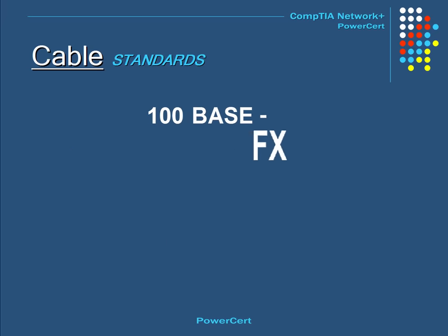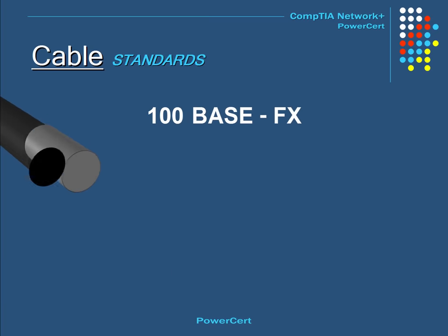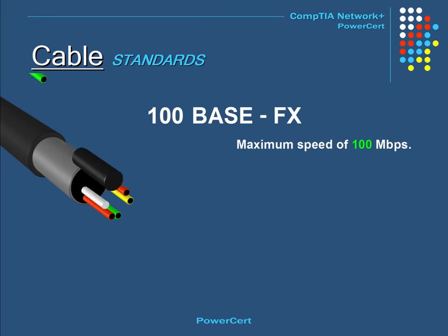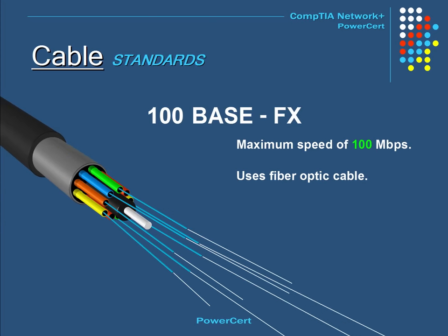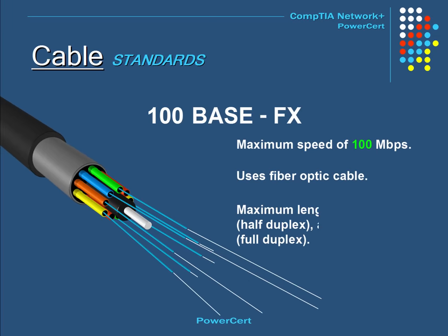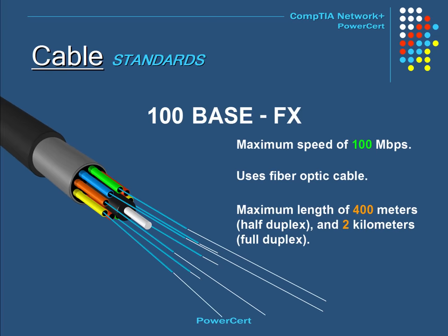100BASE-FX, just like 100BASE-T, has a speed of 100 megabits per second, but the difference is that FX uses fiber optic cable where 100BASE-T uses copper cabling. It has a maximum length of 400 meters in half duplex mode and 2 kilometers in full duplex mode.